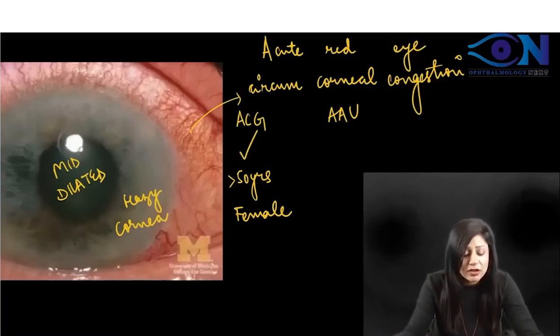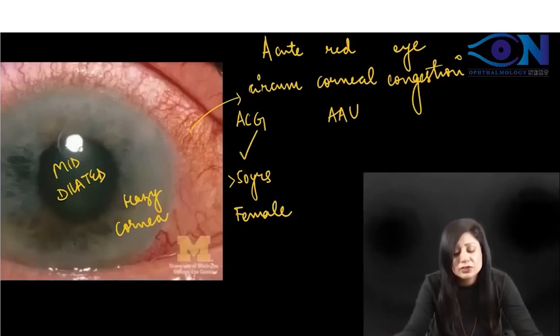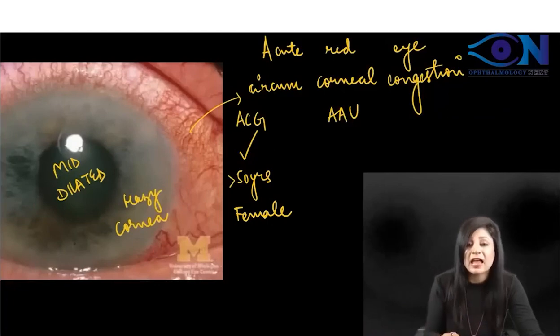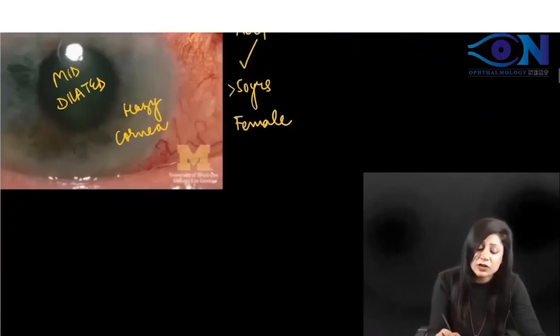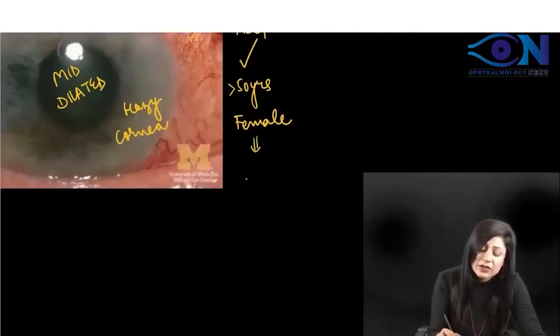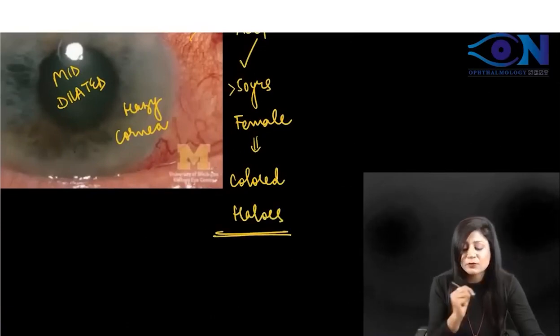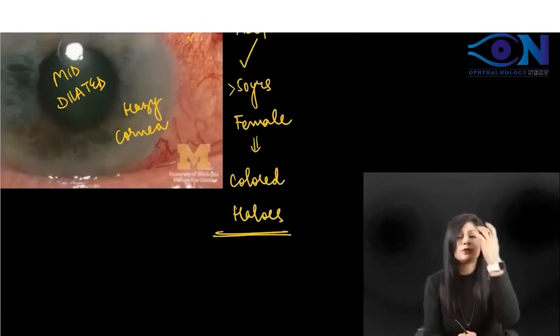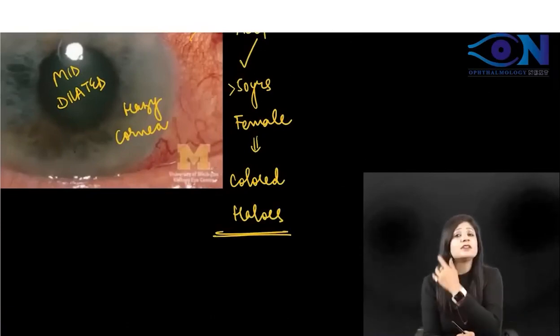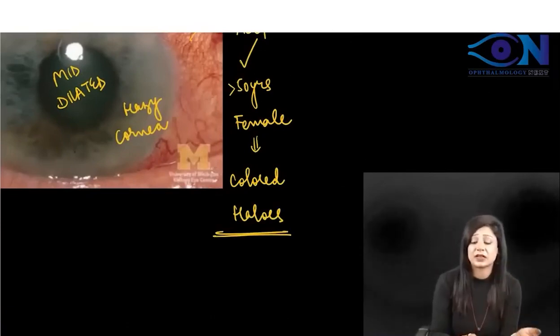Mid-dilated pupil, more than 50 years, female — and she will also come with a very typical symptom of colored halos.